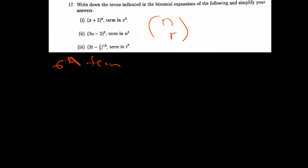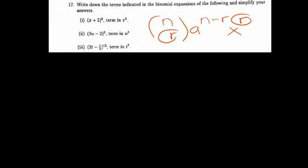For the first one, we are familiar with finding the n-th term. The formula we use is n choose r, and r starts counting from 0, so the 6th term is where r equals 5. Our 'a' is raised to the power of n minus r, and x is raised to the power of r. It's faster and easier if x is on the second part of the expansion, since x matches up with r.